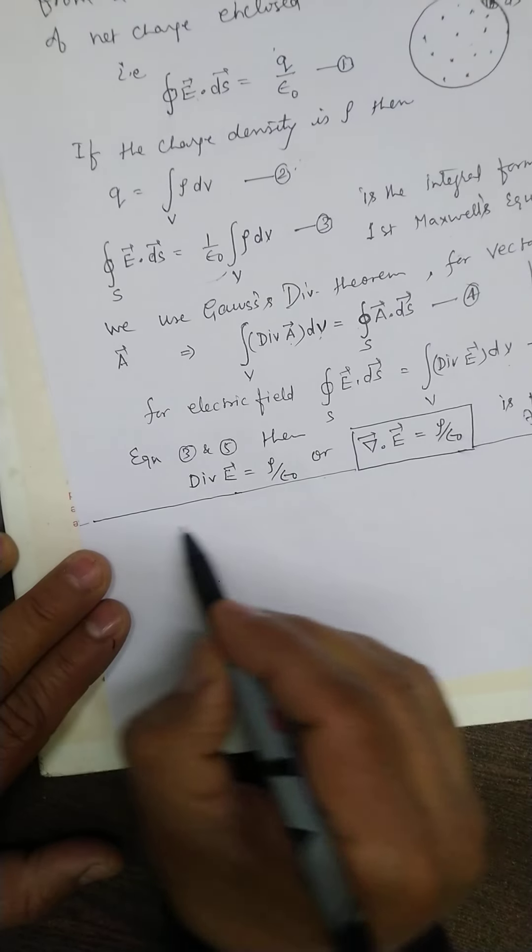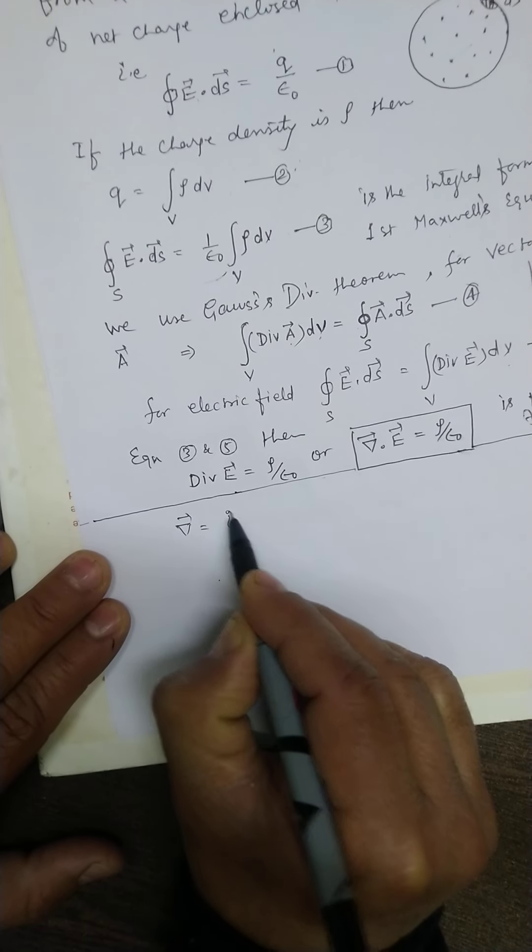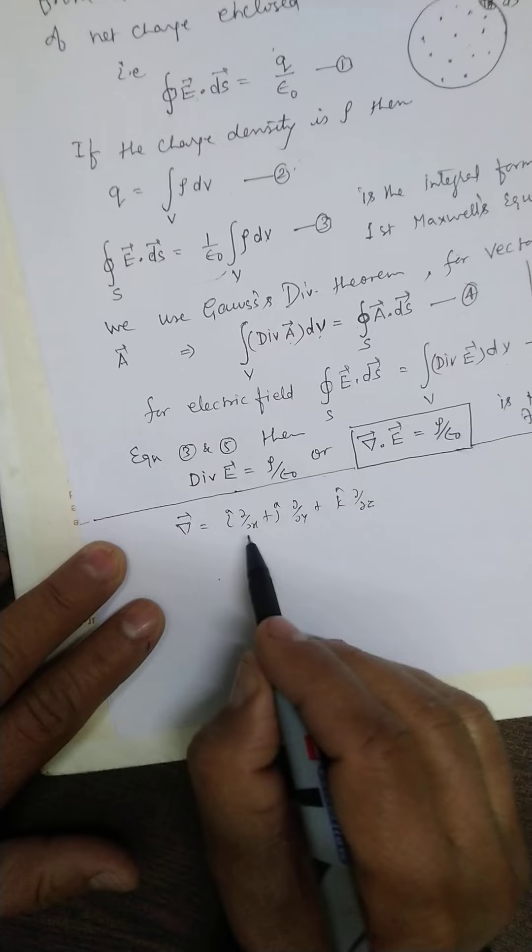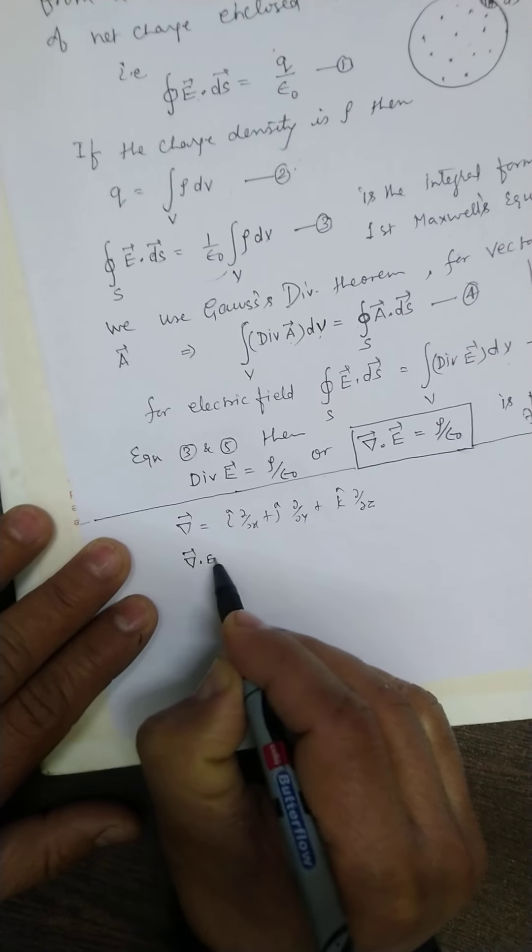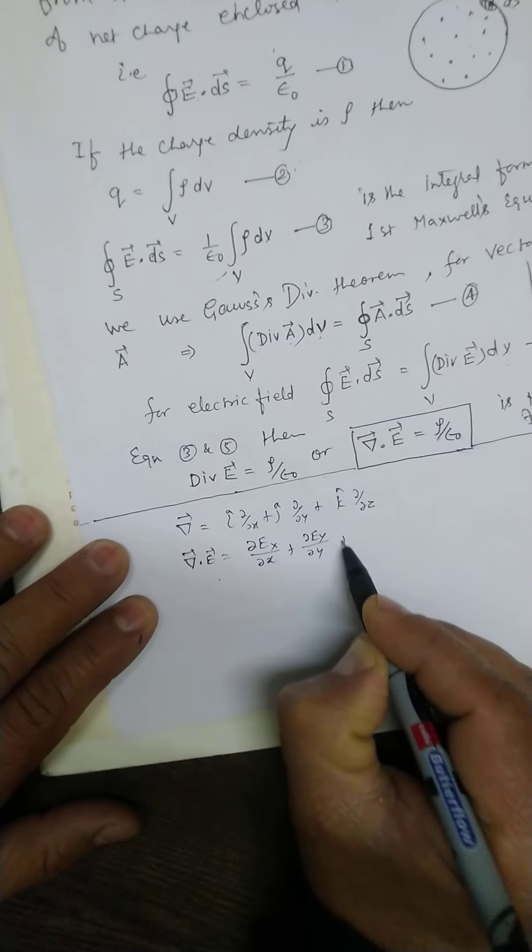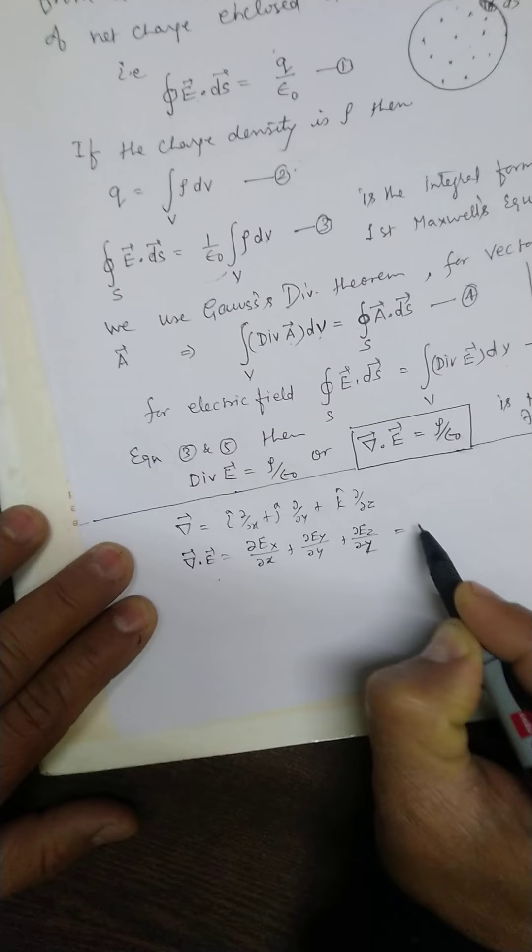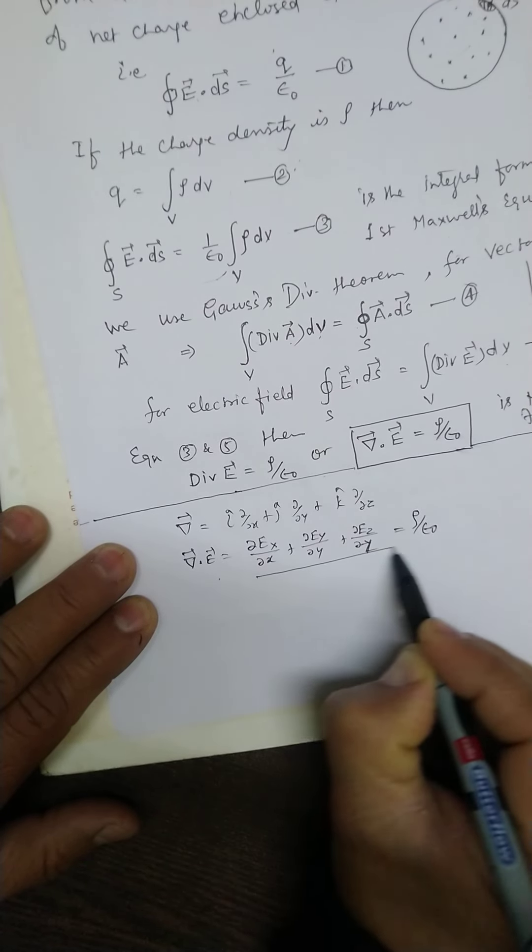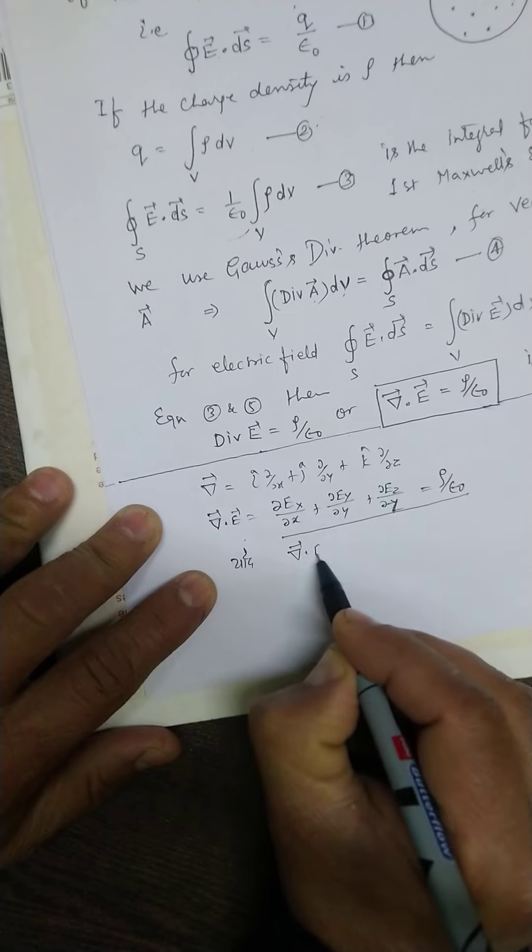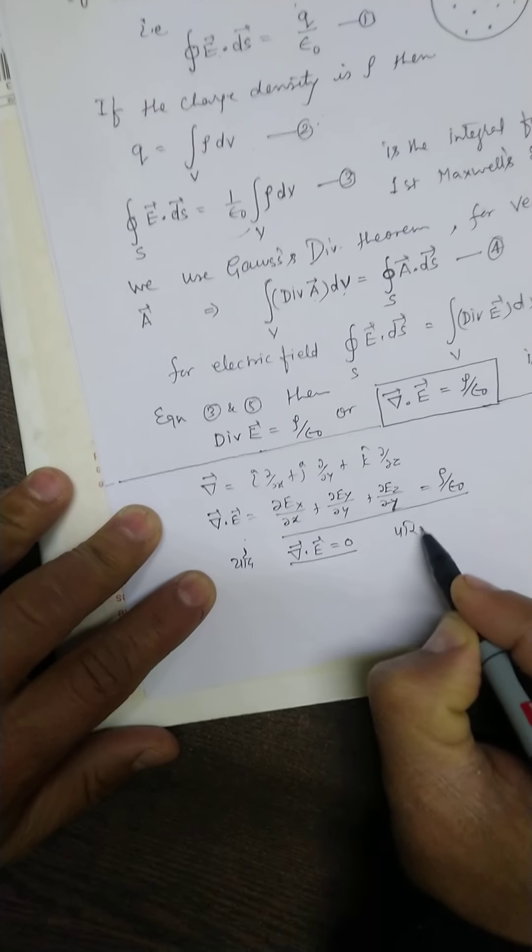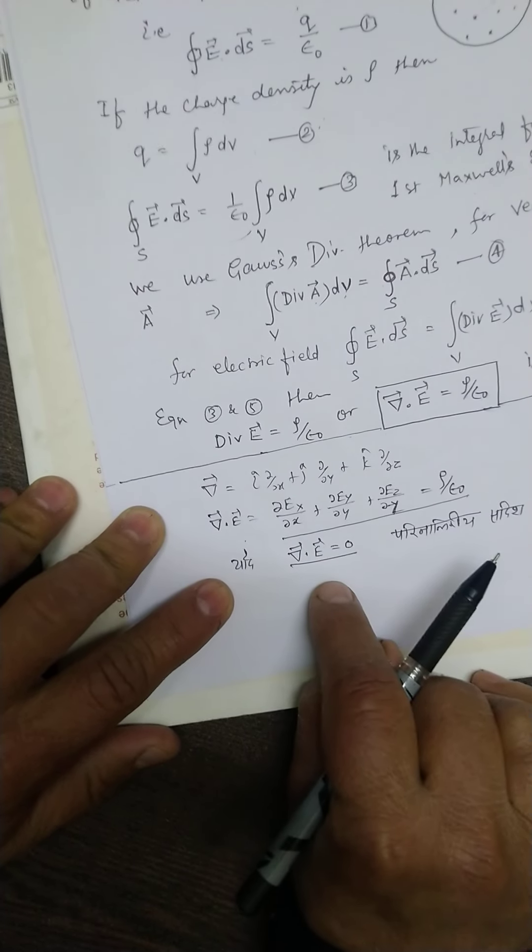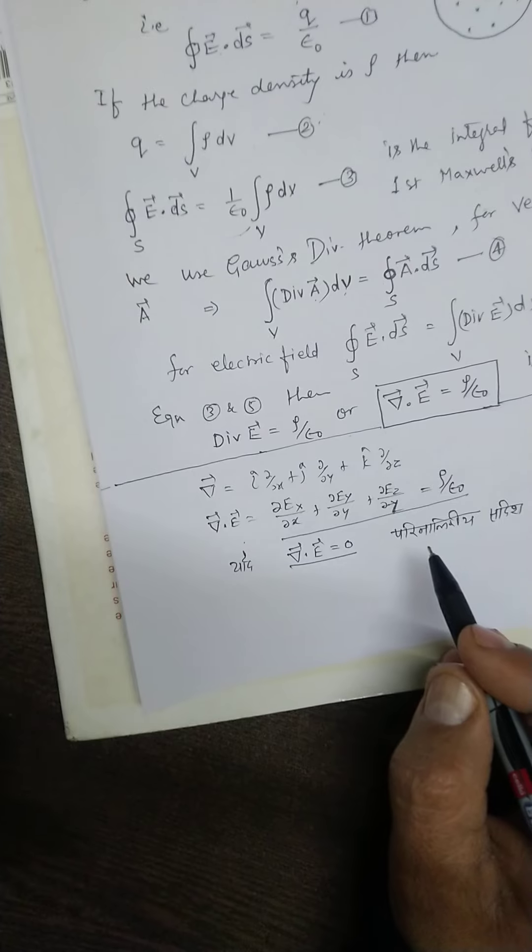The divergence of E, del, is equal to i cap del by del x plus j cap del by del y plus k cap del by del z. So the divergence of E is del Ex by del x plus del Ey by del y plus del Ez by del z. It is called a solenoidal vector if the divergence of E is equal to 0.